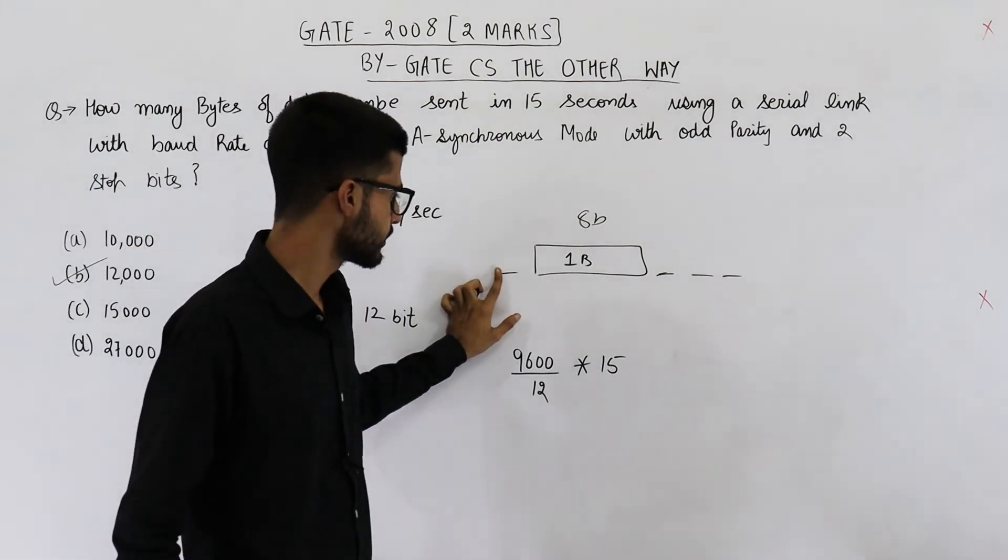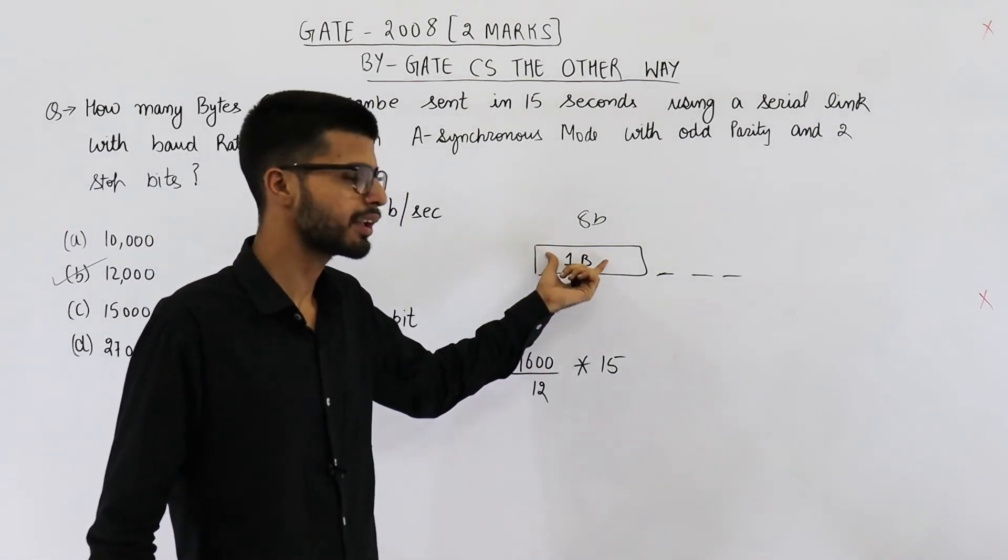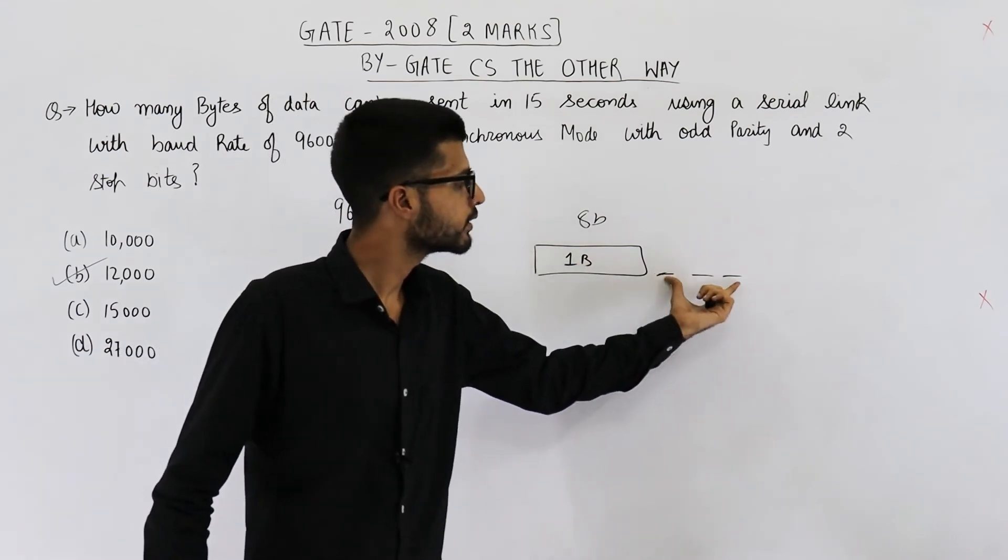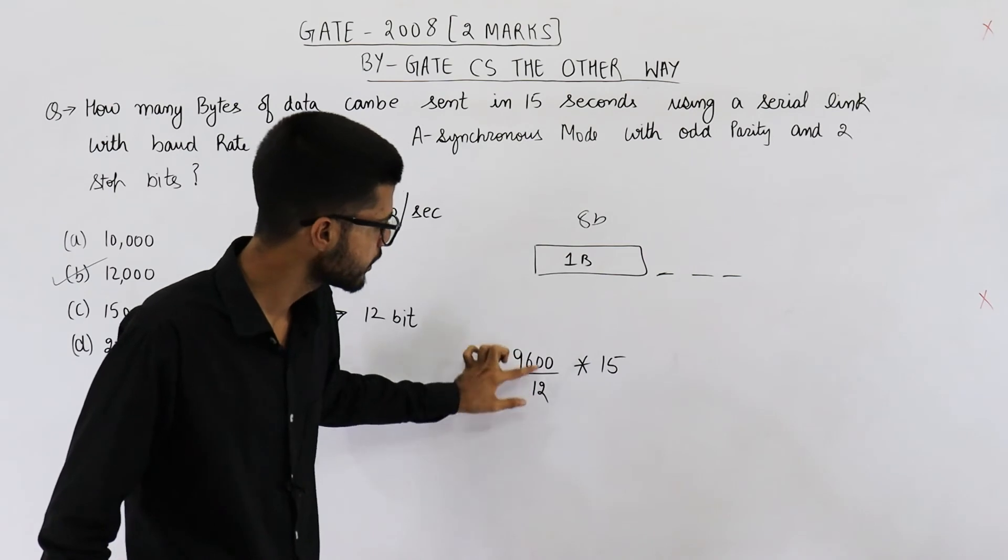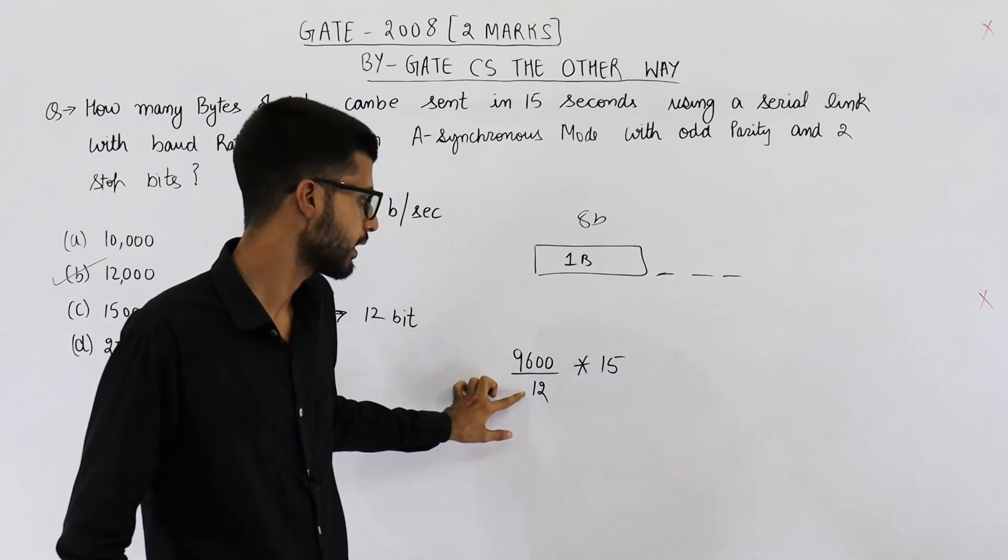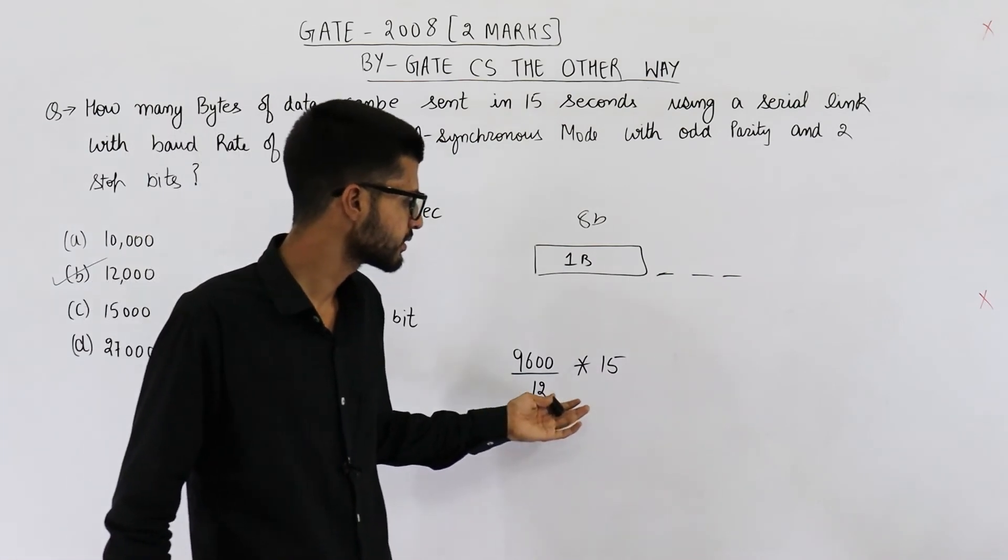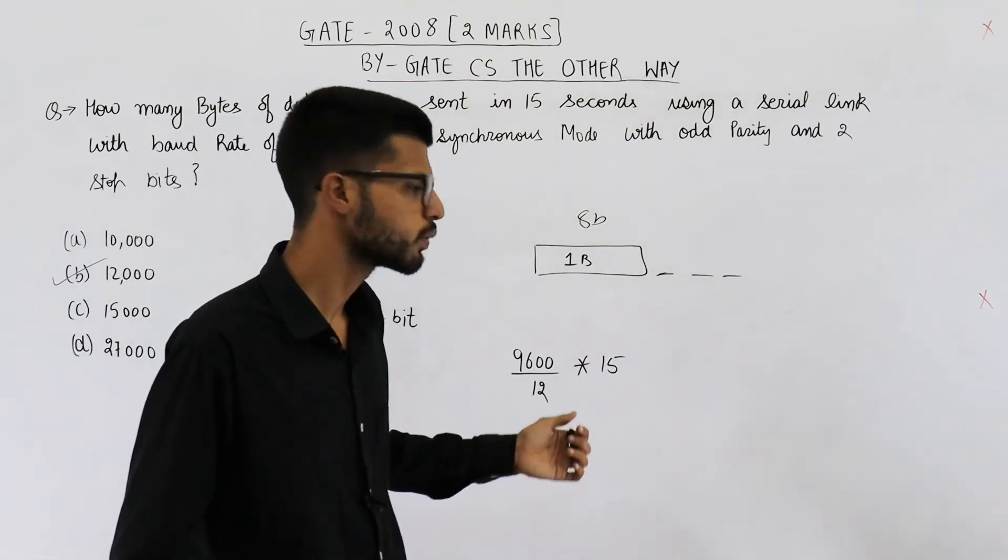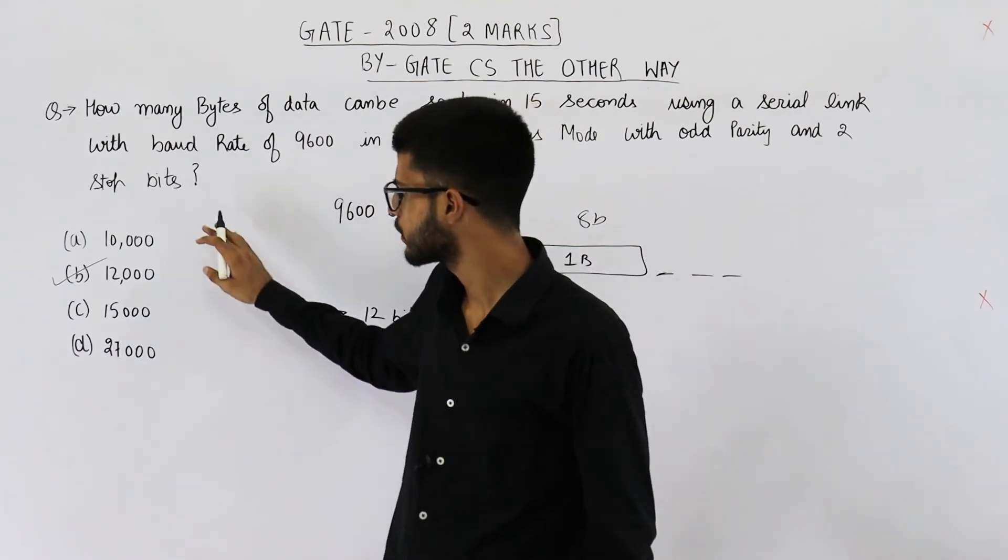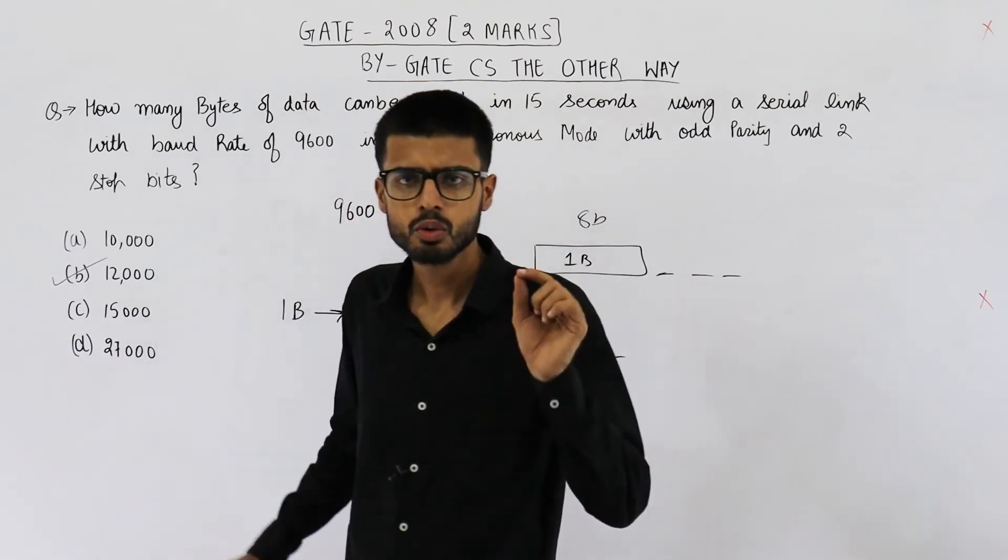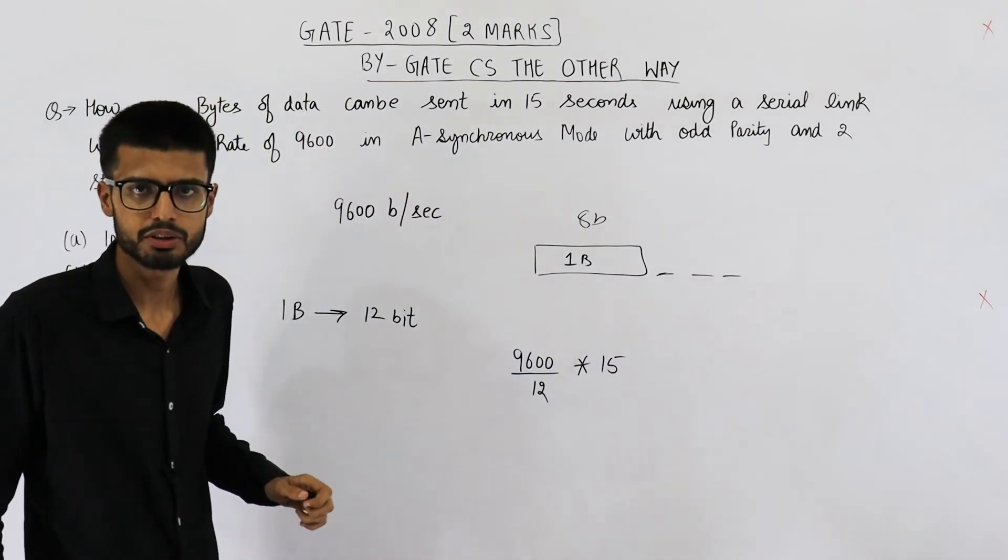If you don't consider this start bit, then you will be transferring one byte of data with three redundant bits. That means 11 bits. So you will divide this 9600 by 11 and multiply by 15. So you will get answer as 13,000 something, a little more than 13,000, and it is nowhere present in the options. So we have to consider one start bit even though they are not mentioning it in the question.